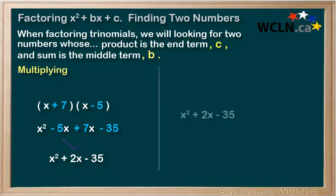+7 times -5 gives us -35. The -5x and the 7x simplify to 2x. Now let's take a look at this exact same question from a factoring perspective. We know we are going to be factoring it into two binomials, so we can set up our brackets below.